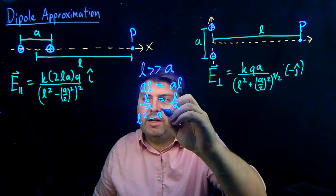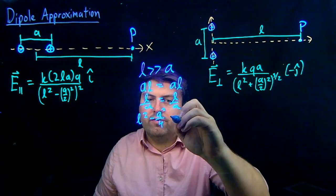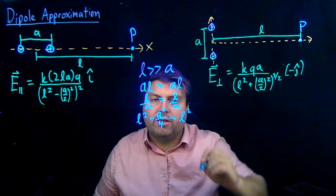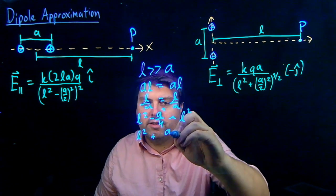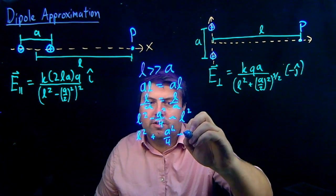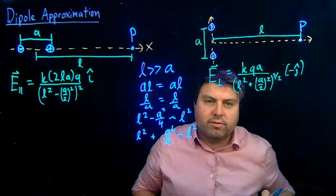L squared minus A over 2 squared, or A squared over 4, is going to be approximately equal to L squared. L squared plus A squared over 4 is going to be approximately equal to L squared.